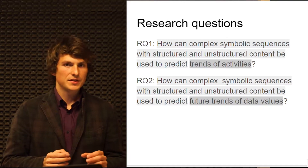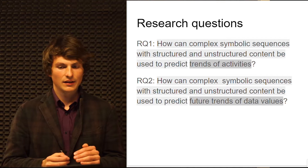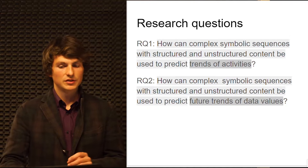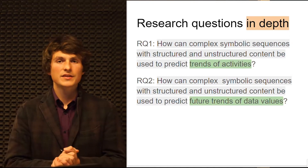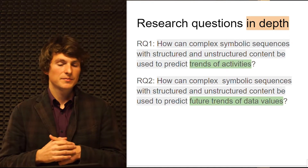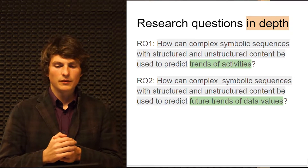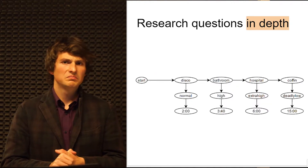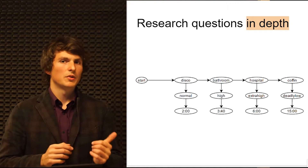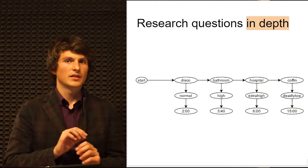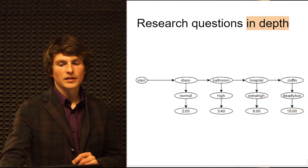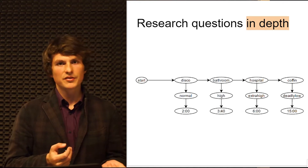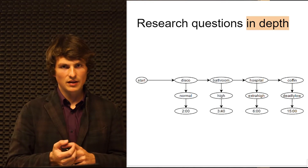How can complex symbolic sequences with structured and unstructured data content be used to predict the trend of activities? Now, let's break it into pieces. First, what is the trend of activities, or what is the data values? So, we have a log — in my case, it's a log about a person. First is activities, and these are where the person is, where is his location. He can be in a disco, then he went to bathroom, then he went to hospital, and then he died.